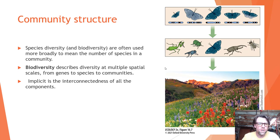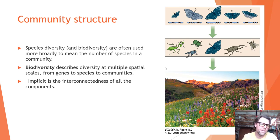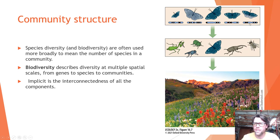Species diversity and biodiversity are often used broadly to mean the number of species in a community. However, biodiversity describes diversity at multiple spatial scales and can include levels from genes to species to communities. A single butterfly species may have considerable genetic diversity, that species makes up an insect community, and that insect community makes up a greater Rocky Mountain ecosystem community — implicit in this is the interconnectedness of all the components.